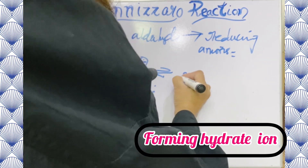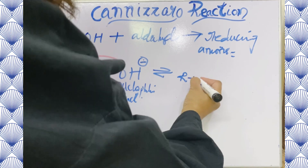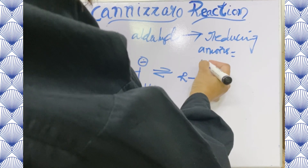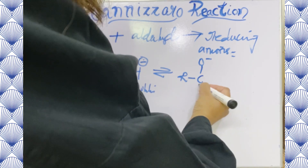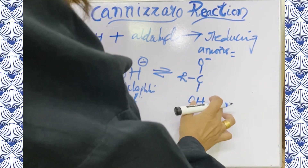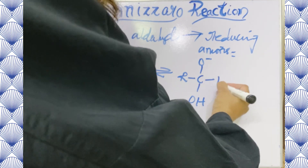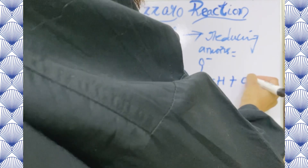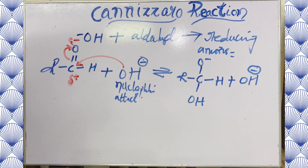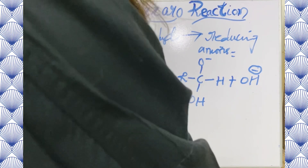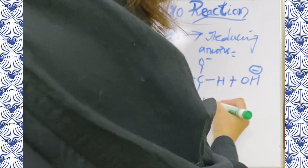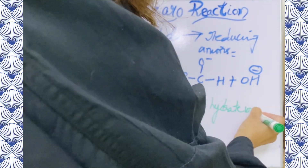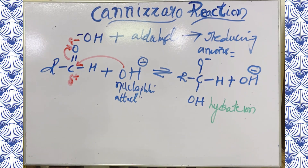It's a reversible reaction, and you are going to get a product where the carbon has an OH from the hydroxide ion and the original H, giving an intermediate. What you are going to call this is a hydrate ion.